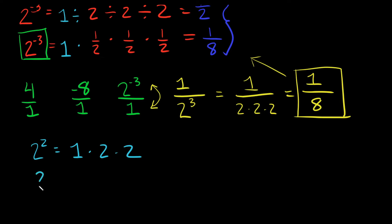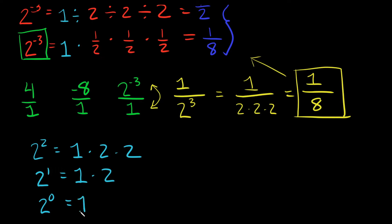Another way you know the 1 is hiding there: 2 squared equals 1 times 2 times 2, 2 to the first power equals 1 times 2, and 2 to the zero power is just equal to 1 — because any number raised to the zero power equals 1.